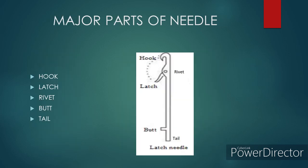Major parts of the needle: There are five major parts of the latch needle which help in the formation of a loop. They are: hook, latch, rivet, butt, and tail. The hook plays the major role in yarn catching and holding — it is in curved form and the yarn is trapped in it. The top portion of the hook is also known as the crown. The latch: the latch needle is named after this part; its major function is to hold the yarn within the hook. The rivet plays the role of fulcrum and fixes the latch with the stem of the needle. The butt is the buffened part of the needle.